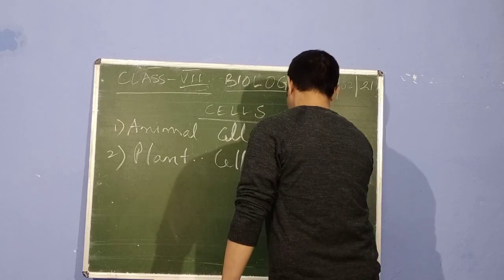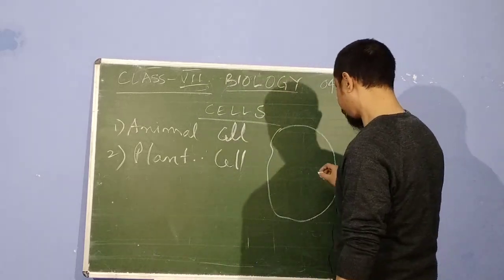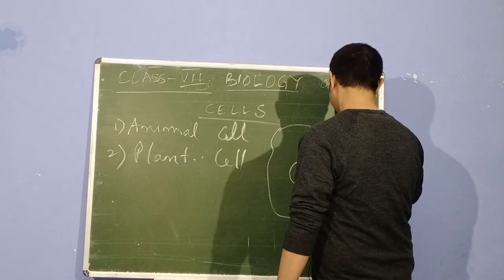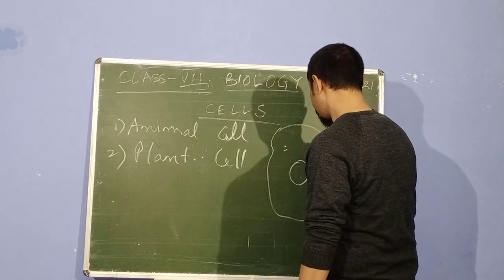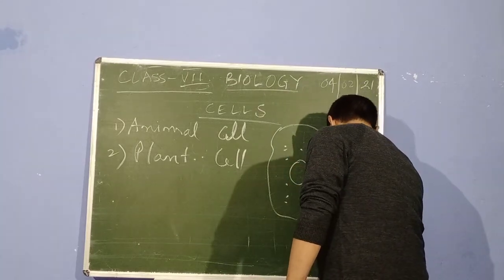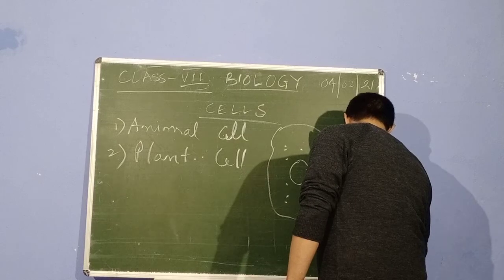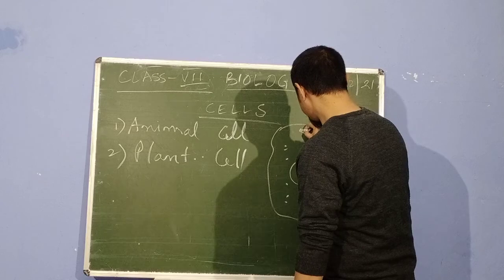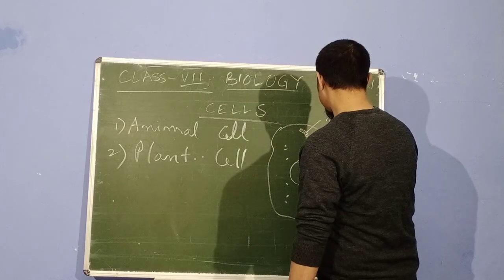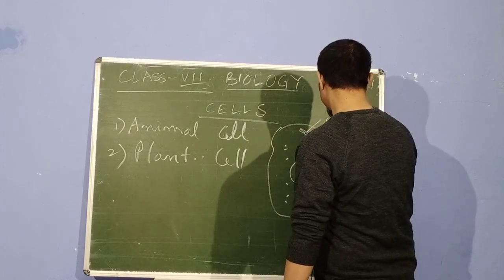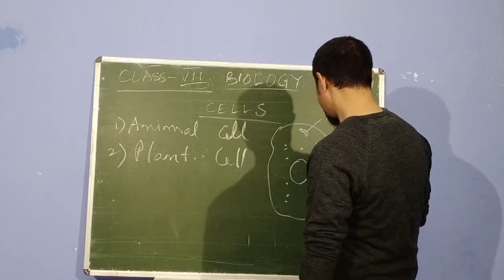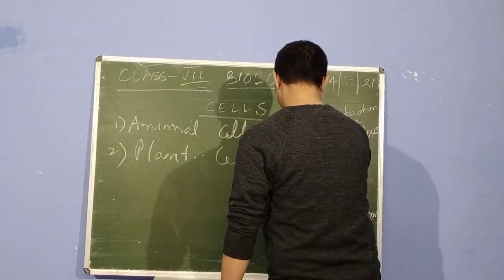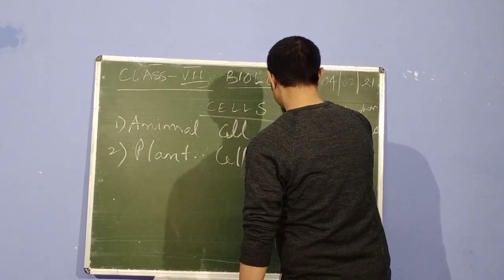I'm just going to make a very rough sketch of a cell. It has a nucleus, there is the cytoplasm, then there are cell organelles, let's call this mitochondria, then you have vacuoles.